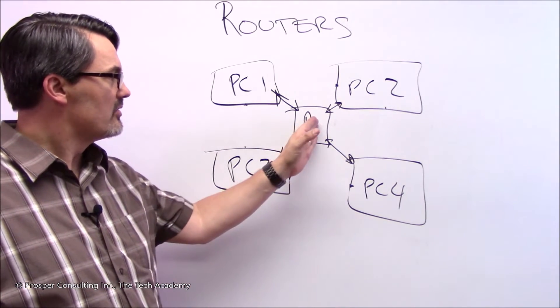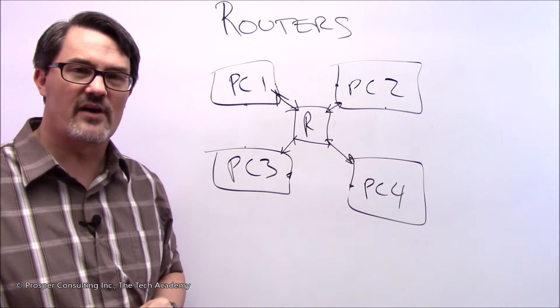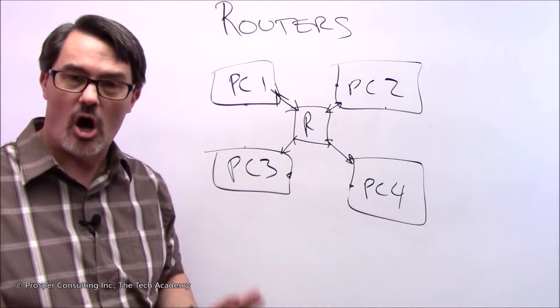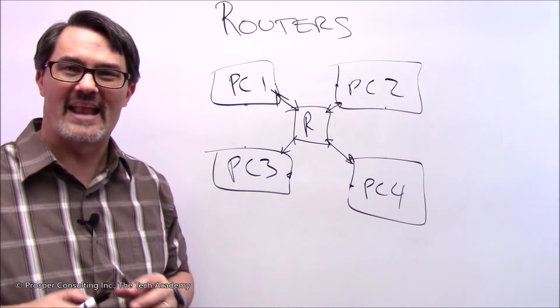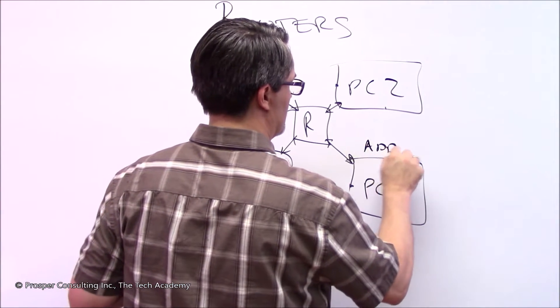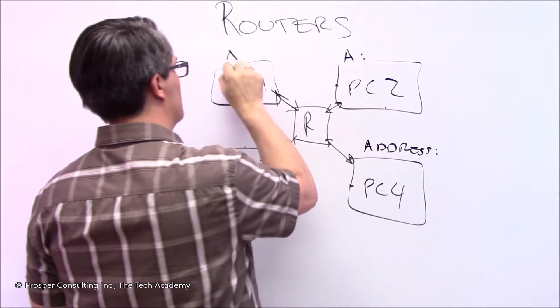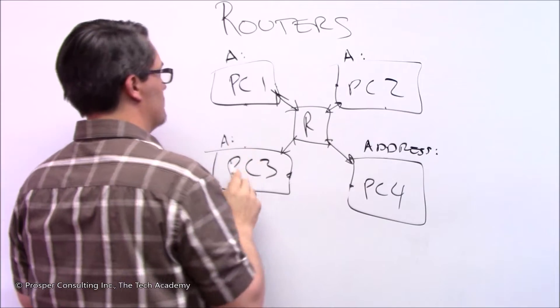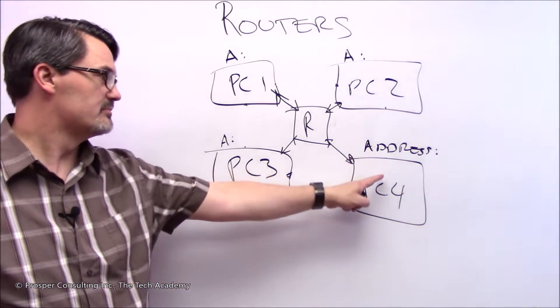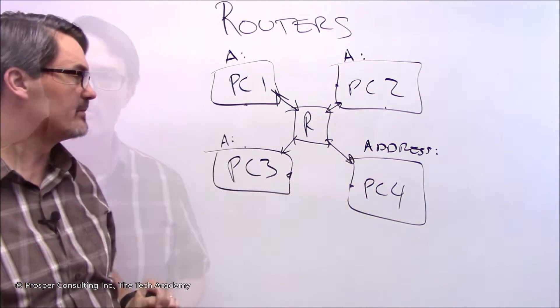One is this. The router is connected to all these computers in the network and needs a way to specify uniquely each one of the computers on the network. Now, the most common way that's done is through an address. Each computer will have a unique address. PC4 has an address, so does PC2, 1, 3. What is an address? It's a unique identifier for that exact machine.